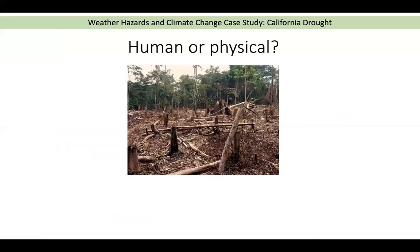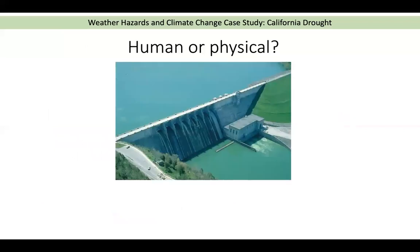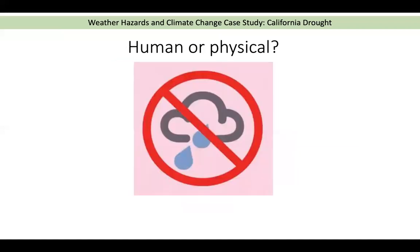Thinking about some of the causes of drought. Deforestation — is that human or physical? That one's human. The building of dams and reservoirs — that's human. You can actually trap water upstream and this prevents more water coming downstream, which is a particular issue if the river crosses national borders. Very little rainfall — that's physical. This is probably going to be a meteorological cause of drought.